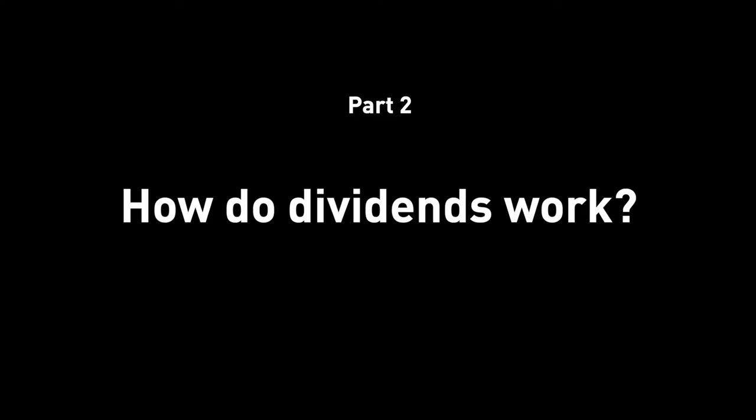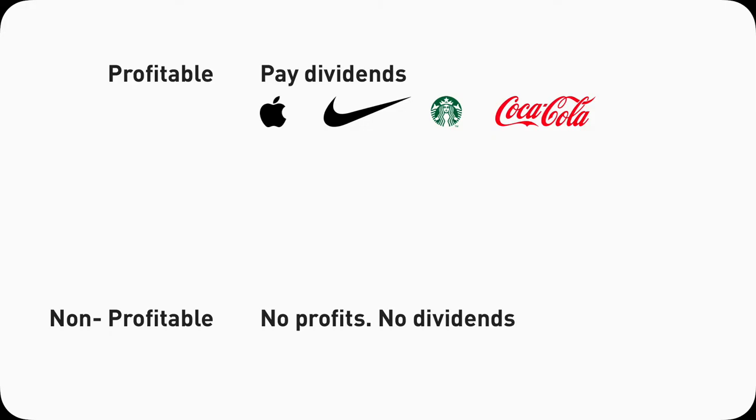Part 2: How does dividend work? How are dividends paid? First of all, only profitable companies can pay dividends — by definition, if the company isn't profitable, there's no profit to divide. Typically, companies that pay dividends are already profitable, were founded a while back, and don't find a great opportunity to reinvest all their profit back into the business. So they start paying out part of their profits to shareholders.